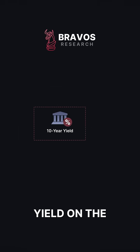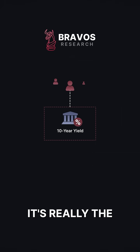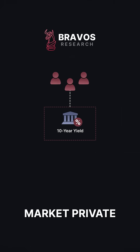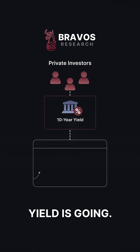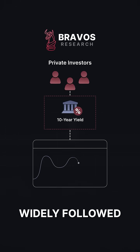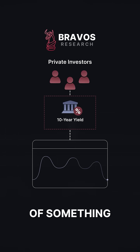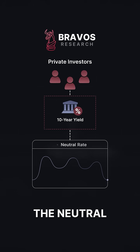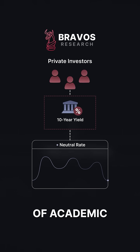The 10-year yield, on the other hand, is not controlled by the Federal Reserve. It's really the market — private investors — that dictates where the 10-year yield is going. The reason it's so widely followed is because it's considered to be a great indication of something called the neutral rate, at least according to numerous pieces of academic research.